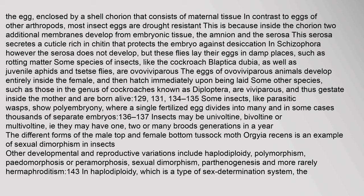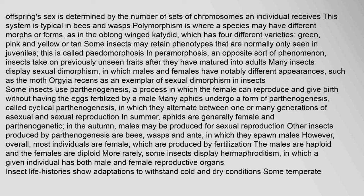Insects may be univoltine, bivoltine or multivoltine — having one, two, or many broods per year. Other developmental and reproductive variations include haplodiploidy, polymorphism, pedomorphosis, sexual dimorphism, parthenogenesis, and more rarely hermaphroditism. In haplodiploidy, the offspring's sex is determined by the number of sets of chromosomes an individual receives; this system is typical in bees and wasps. Polymorphism is where a species may have different morphs or forms, as in the oblong-winged katydid, which has four varieties — green, pink, and yellow or tan. Some insects may retain phenotypes normally only seen in juveniles, called pedomorphosis; in peramorphosis, an opposite phenomenon, insects take on previously unseen traits after maturing into adults.